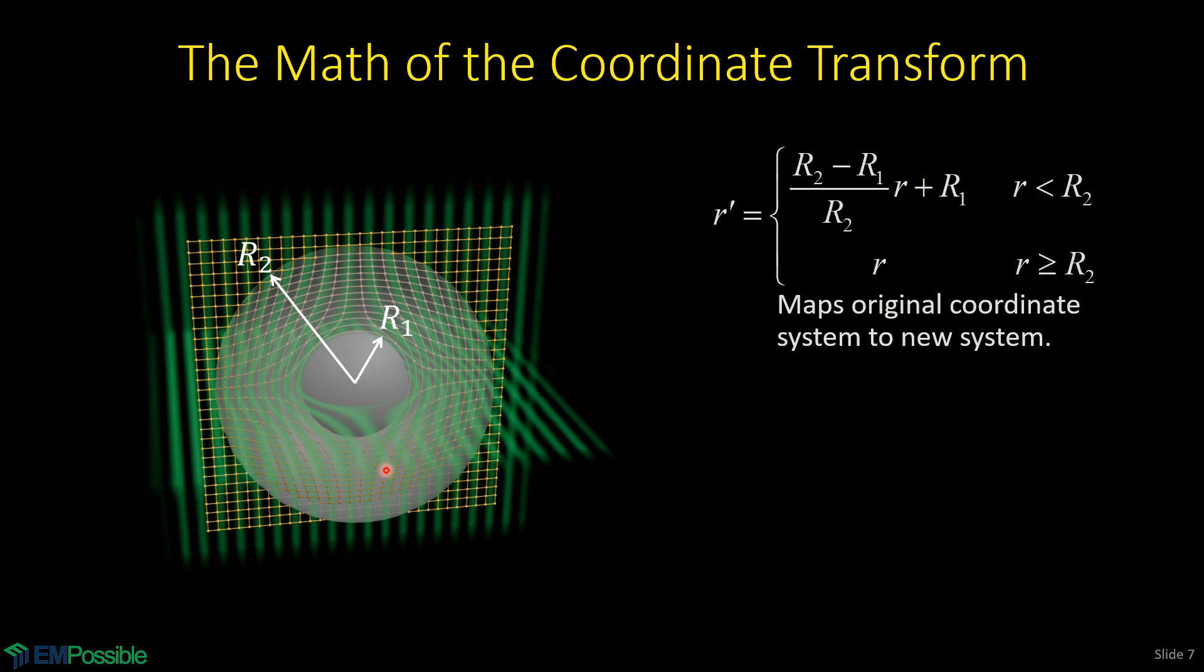For values of little r less than r2 - in other words, we're inside this cloak - we'll be using this first equation. For values outside, we won't touch it. So the distance of all these points outside the cloak will stay the same before and after the transform. We're not doing anything outside of r2. Inside r2, as I said, we're moving these points outward. When little r is zero, so we're tight up against the origin here, this whole left term cancels and we're just left with r1. So that tells us in the transform coordinate system, the closest the points will ever approach the origin is r1, so they'll be circling right around the object that we're trying to cloak.